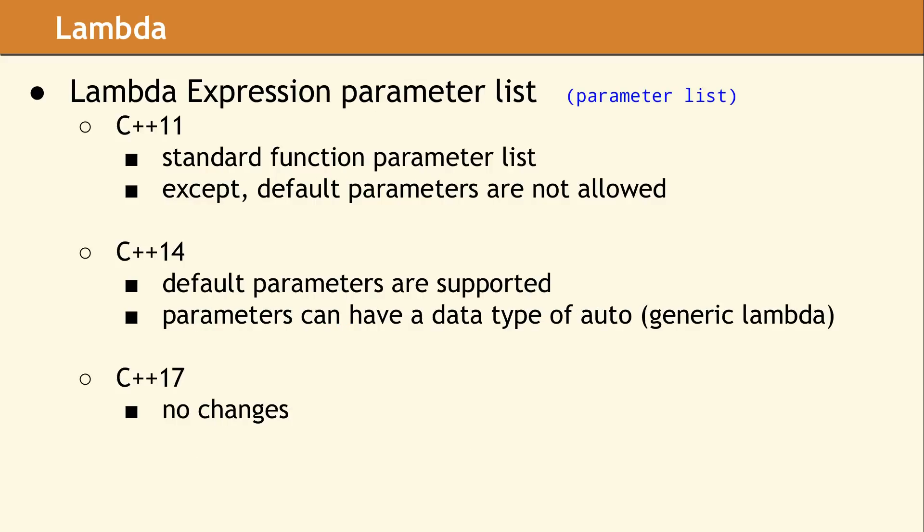In C++14, the ability to specify a default value for a parameter was added to the lambda expression parameter list. You can also use a data type of auto for any of the parameters. Using auto has the effect of making the lambda expression resemble a templated function. This is called a generic lambda since it does not look exactly like a template. A new lambda body will be instantiated for each data type that is passed to the parameter declared with auto.